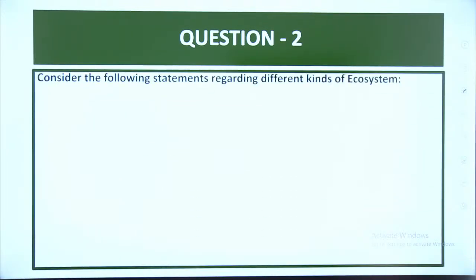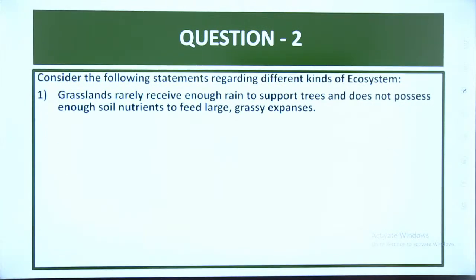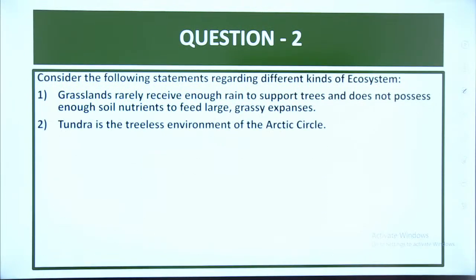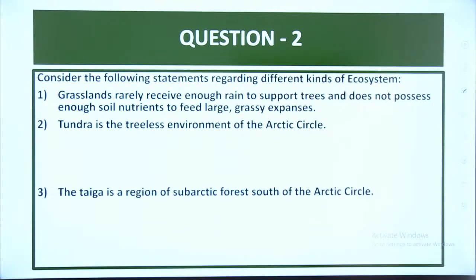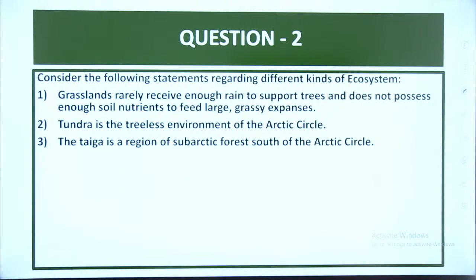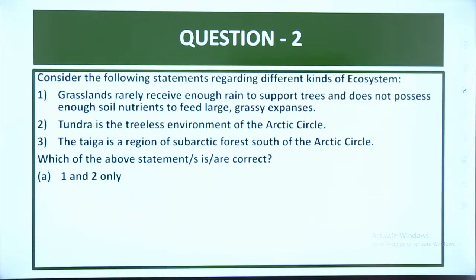Next question. Question number 2. Consider the following statements regarding different kinds of ecosystems. A: Grasslands rarely receive enough rain to support trees and do not possess enough soil nutrients to feed large grassy expansions. Second statement: Tundra is the treeless environment of the Arctic Circle. Third: The taiga is the region of sub-arctic forests south of the Arctic Circle. Which statements are correct? A: 1 and 2 only. B: 3 only. C: 2 and 3. D: 1 only.